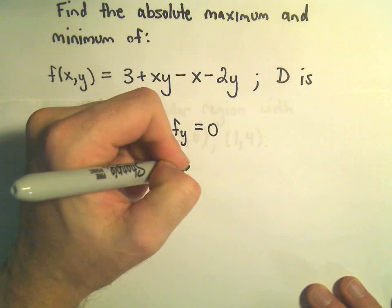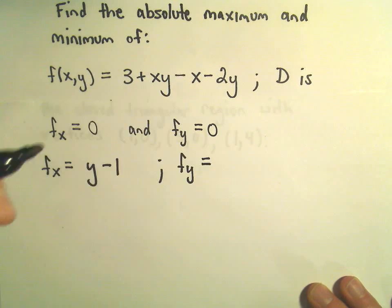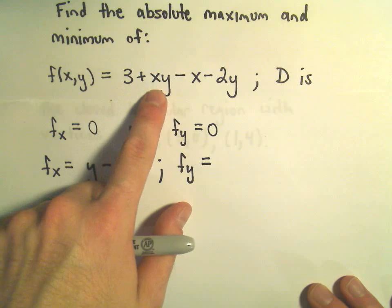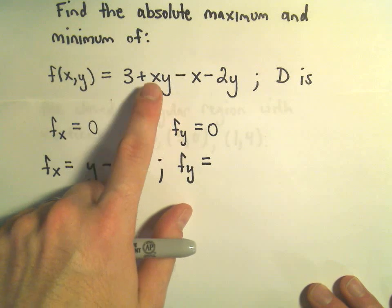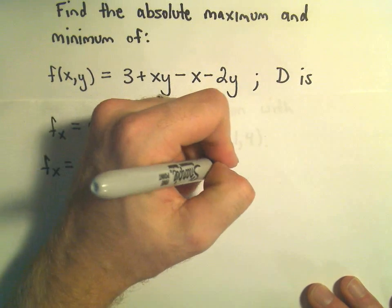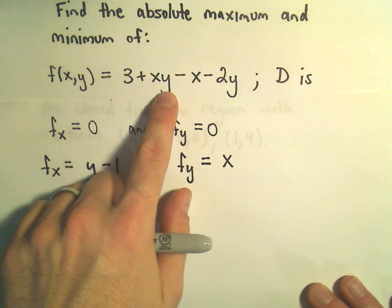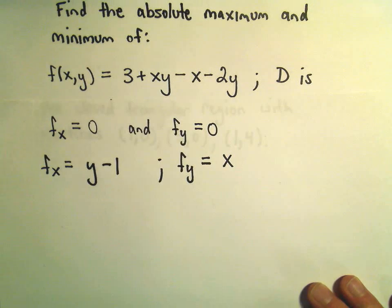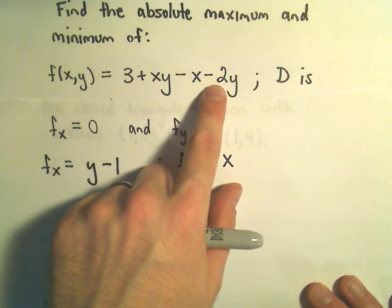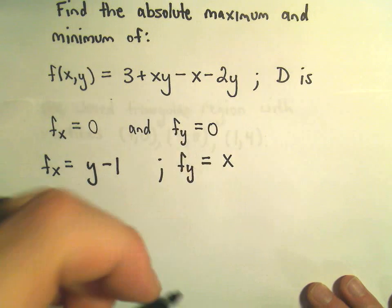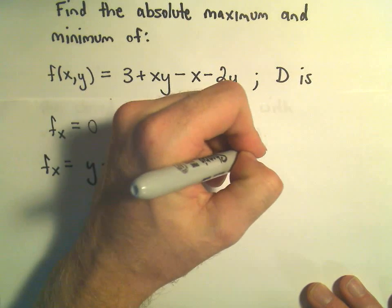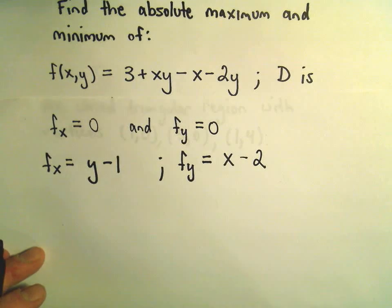Likewise, we have to take the partial derivative with respect to y. Again 3 is a constant, it goes away. Y is now our variable, x is like a constant, so we'll just get x when we take the derivative of xy. The negative x will simply go away, and when we take the derivative of negative 2y with respect to y, we'll simply get negative 2.